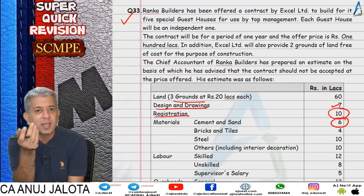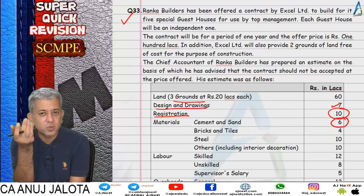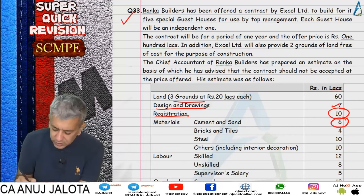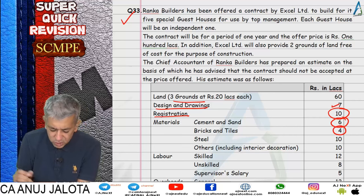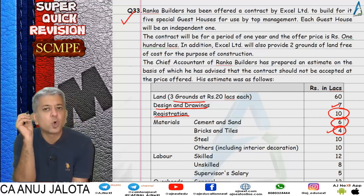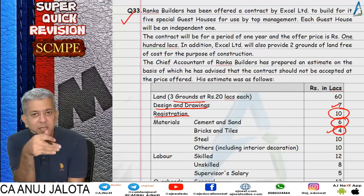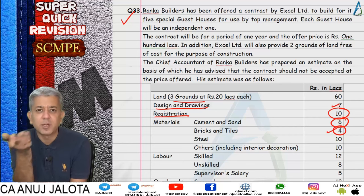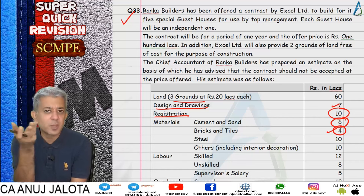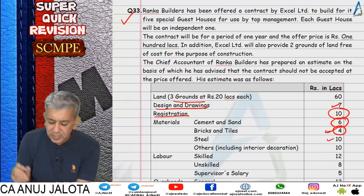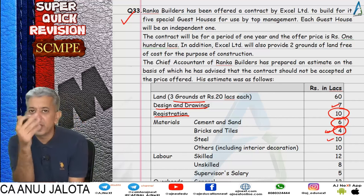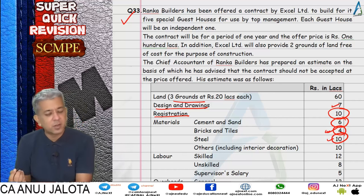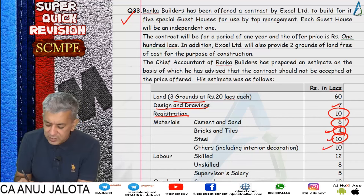Cement and sand are in regular use, so relevant cost is current replacement cost as given. Bricks and tiles: extra stock sitting there - if offer hadn't come, we'd have sold it. Now use it instead, losing whatever the selling price would have been. Steel: no adjustment, it still needs to be purchased, so 10 lakh rupees expenditure will be incurred.